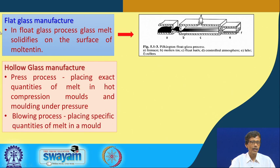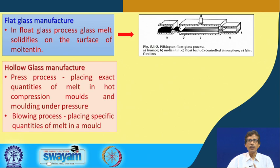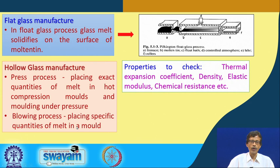Another variety is hollow glass, and the manufacturing process depends on two types: the press process and the blowing process. In the press process, an exact amount of melt is put in hot compression molds and molding is done under pressure. In the blowing process, a specific quantity of melt is placed in the mold and we go for blowing. Through these different varieties we get different glass samples, and we now check their properties.